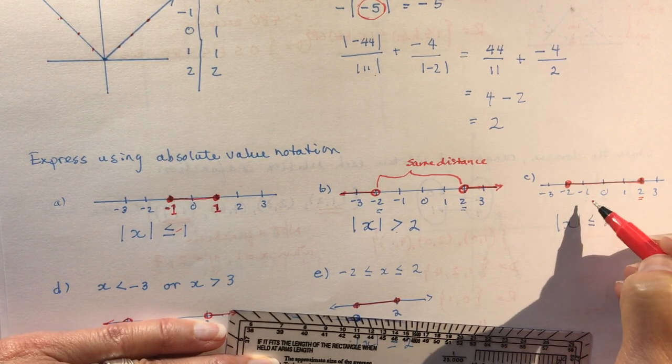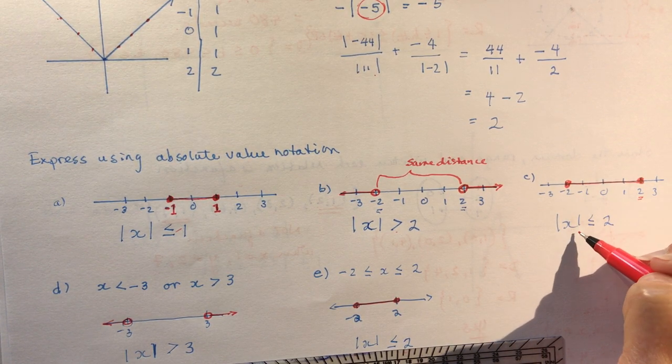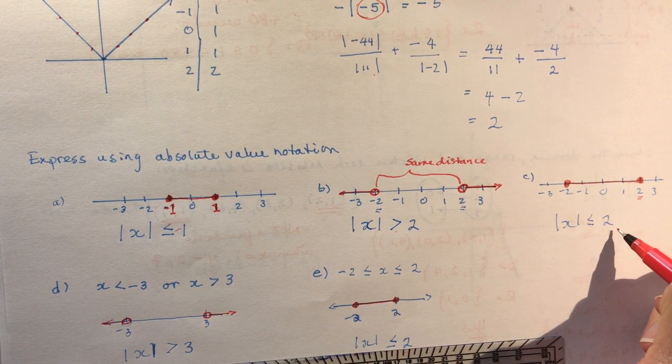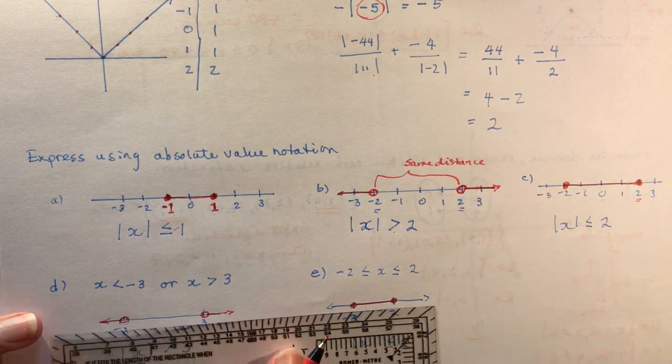We're between these two values so less than or equal to 2. You always want to check—take two seconds and say, oh, absolute value of negative 1 is 1, that's less than or equal to 2.